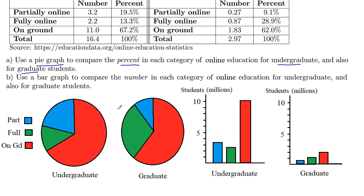So we're able to compare relative amounts or percents. The key is that our percentages have to add up to 100%, and they do in both cases, so it's appropriate to use a pie graph. We can see there's about twice as many in percent that are partially online for undergraduates as there are for grads, less than half as many fully online undergraduates compared to graduate students, and more fully on-ground students that are undergraduate as opposed to graduate.